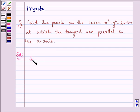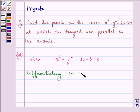So we are given x square plus y square minus 2x minus 3 equal to 0. Now in differentiating the above equation with respect to x, we get 2x plus 2y dy by dx minus 2 equal to 0.